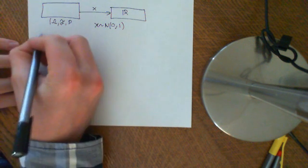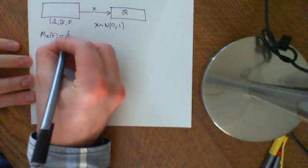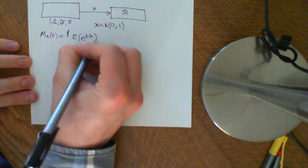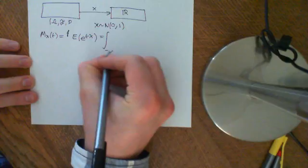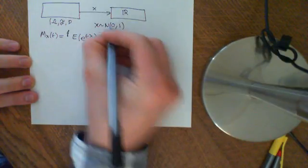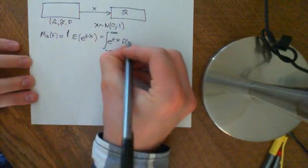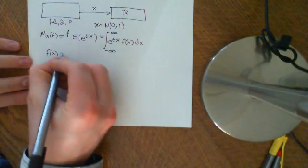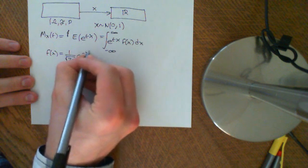We would like to work out what the moment generating function of X is as a function of t. By definition, this is the expected value of e to the tX. By LOTUS, this is equal to the integral from negative infinity to infinity of e to the tx times the probability density function of the standard normal distribution, f(x) dx.